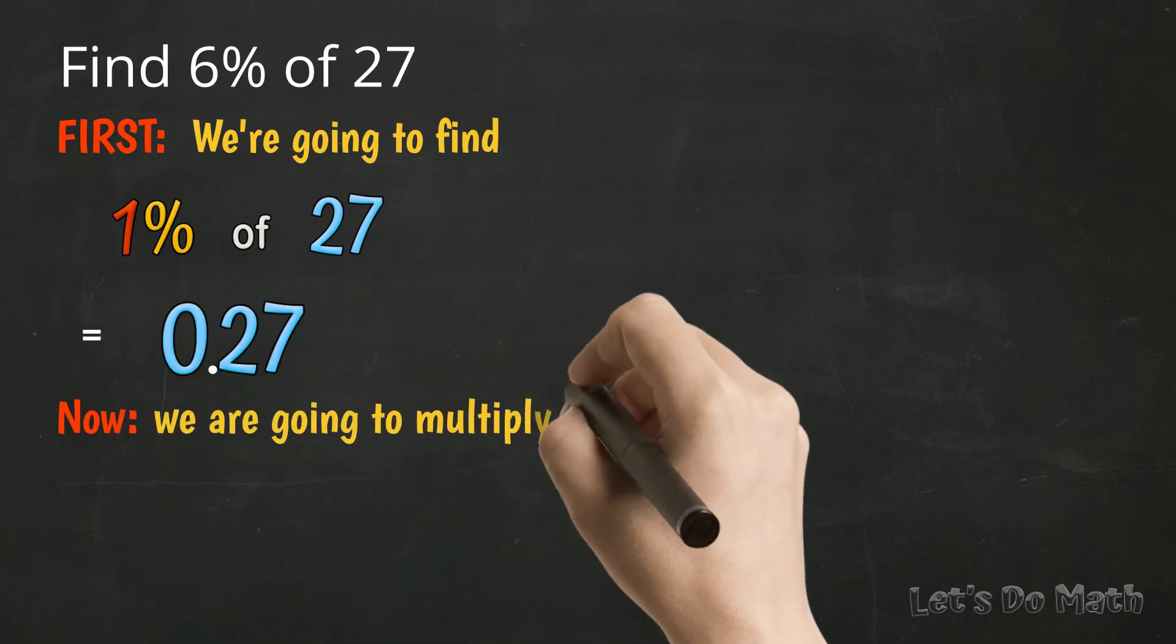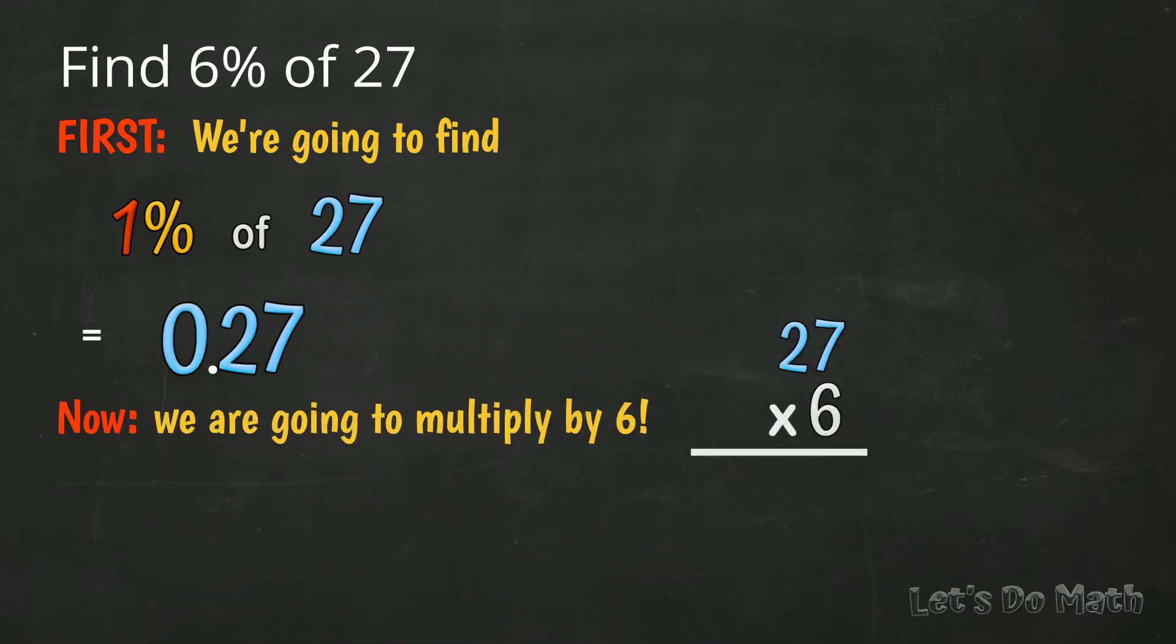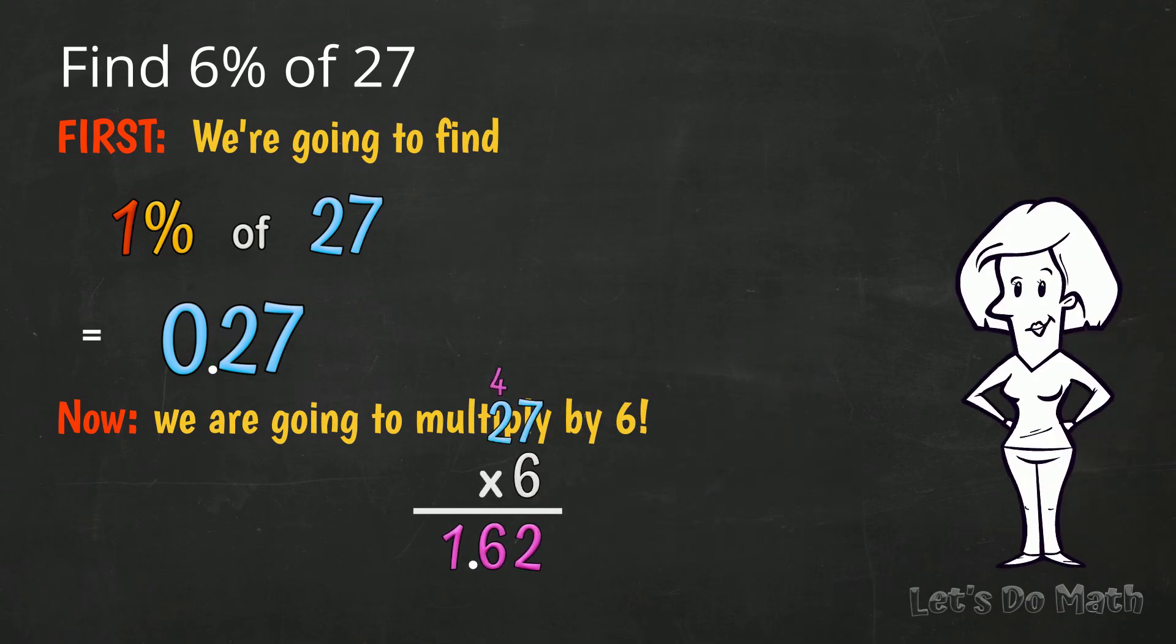So now we are going to multiply by 6. 6 times 7 is 42. 6 times 2 is 12. Plus the 4 is 16. 162. We have 2 decimal figures in the problem, so we need 2 decimal figures in the answer. 1.62. Think about it.